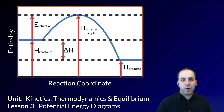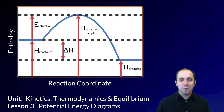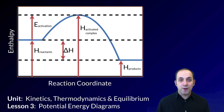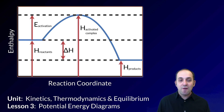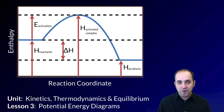Hi and welcome to lesson three here in our kinetics thermodynamics and equilibrium unit. In lesson two we talked about the kinetics of a reaction. Here we're going to talk about how you're expected to represent the kinetics of a chemical reaction through what's called a potential energy diagram. I've given an example of a potential energy diagram up here at the top, and we're going to go through it and take a look at what all of these parts are.